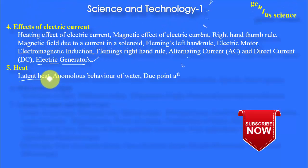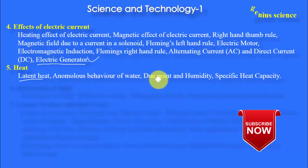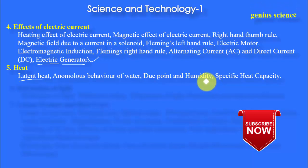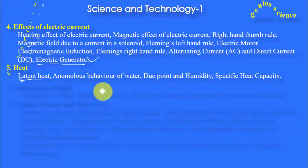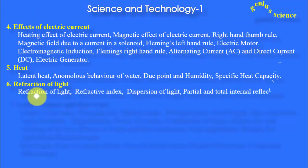In the Heat chapter, we must learn and remember latent heat, anomalous behavior of water, dew point and humidity, and specific heat capacity. These are the important bits from the Heat chapter. The next chapter is Refraction of Light.